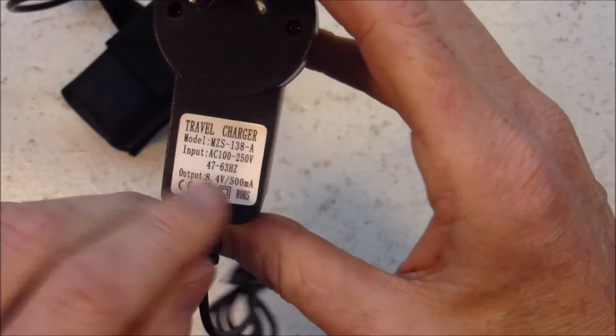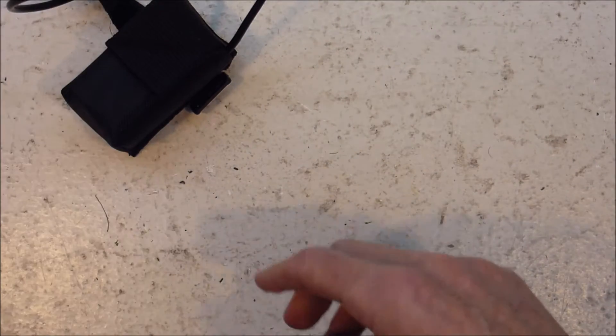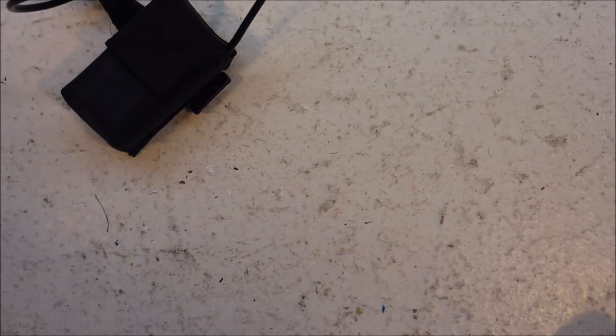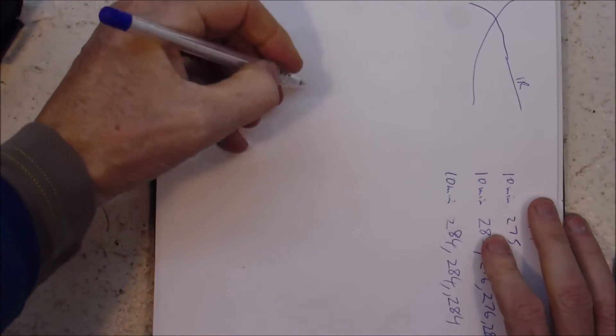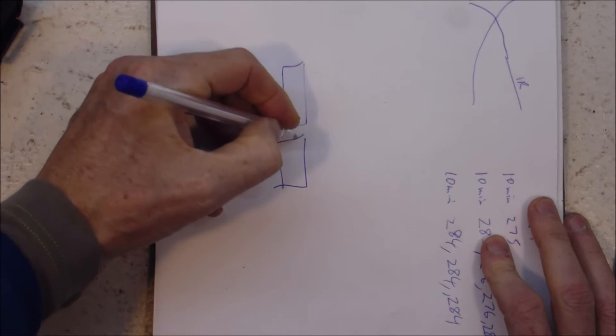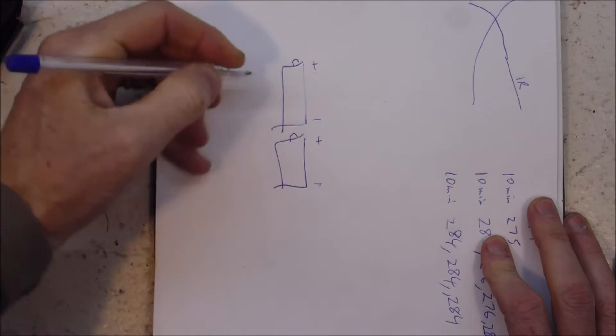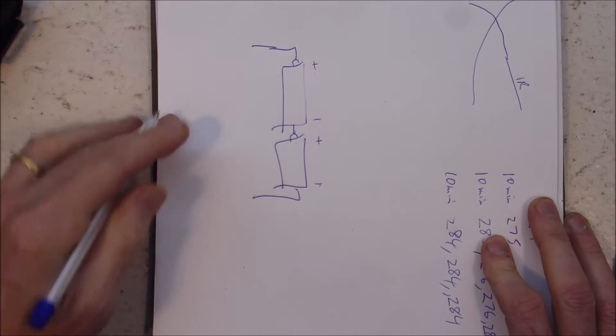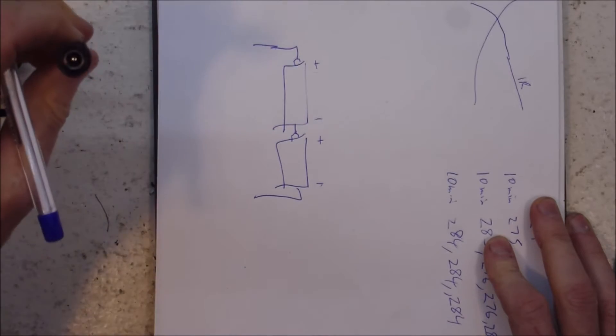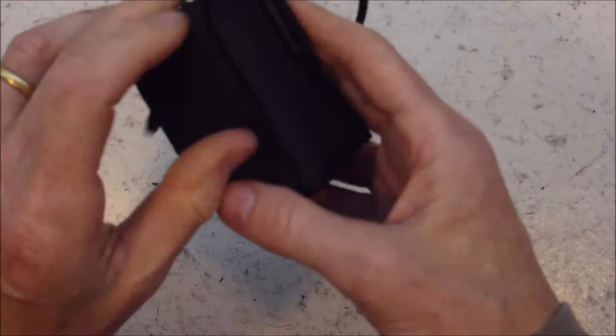The charger says 8.4 volts so it's probably 2 cells in series, which looks like there's a positive, plus, minus, plus, minus. That'll be joined like that and then that will go off to the connector. Let's open it up and see.